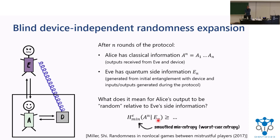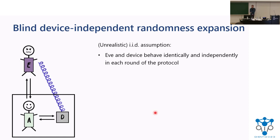It turns out that it's kind of hard to just bound this min entropy directly. The intuition for why it's hard is that Alice runs this protocol with untrusted parties who can run any attack they want — in particular, an attack which is correlated or even entangled across different rounds of the protocol. You need to bound this quantity against any such possible attack. So one thing you might be tempted to do is introduce an additional assumption: suppose Eve and the device behave identically and independently in each round. This is called an IID assumption. It's unrealistic, but we can make it in the proof.